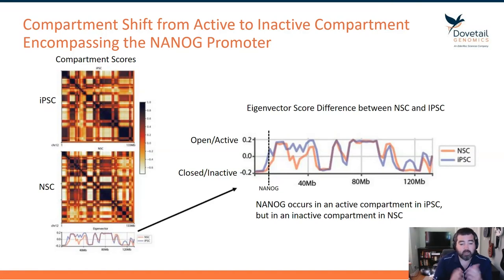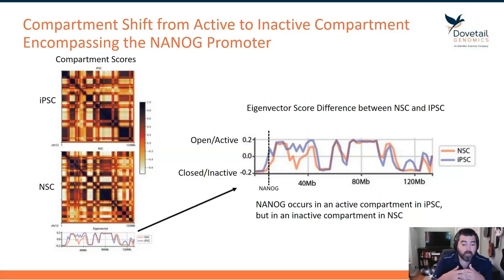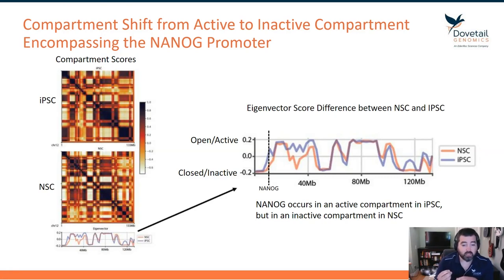Just visually looking at these two score maps, we can see differences in how these matrices actually look. But it becomes a lot clearer when we look at the eigenvector — the key score across the matrix that tells us whether a region is in an A or B compartment — across the length of chromosome 12.